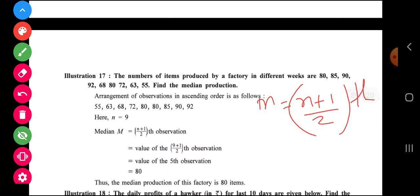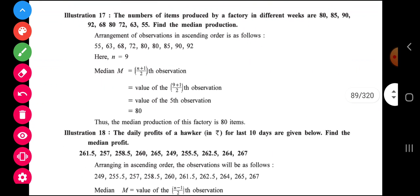Example number 17 on page number 85. Simultaneously you all keep your textbook open and observe the video and then you practice in your note. Example 17 which is very simple. You can expect this question in MCQ. The number of items produced by a factory in different weeks are 80, 85, 90 and so on. Find the median production. So you can see there are how many observations, 9 observations are there.